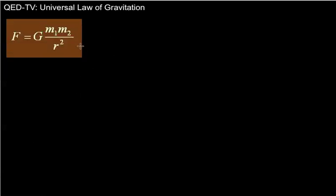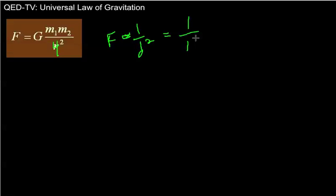Question 3: what happens to the force if I quadruple the distance between the two objects while keeping the masses the same? Force is proportional to 1 over distance squared. So it would be proportional to 1 over 4 squared, which is 1/16. If I move two objects four times farther apart, the force would be 1/16th of the original force.